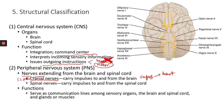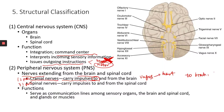The spinal nerves carry impulses to and from the spinal cord. We have 31 pairs of spinal nerves. If those nerves carry impulses to the brain, that's the sensory division. And if the spinal nerves carry impulses to the spinal cord, that's also part of the sensory nervous system.